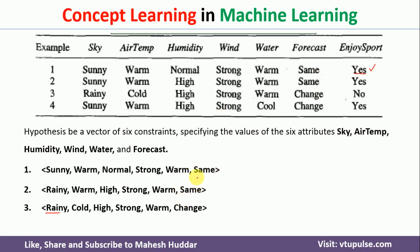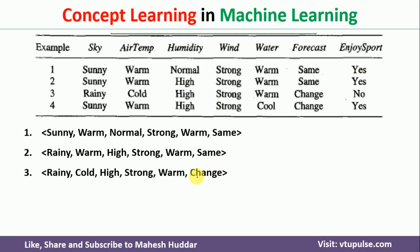The same process has to be followed unless and until we get one solution, which is a very tedious task. To avoid that, we usually use two algorithms: the first one is Find-S, and the second one is the Candidate Elimination Algorithm. I have solved many examples on these two algorithms and the link for those examples is given in the description below.